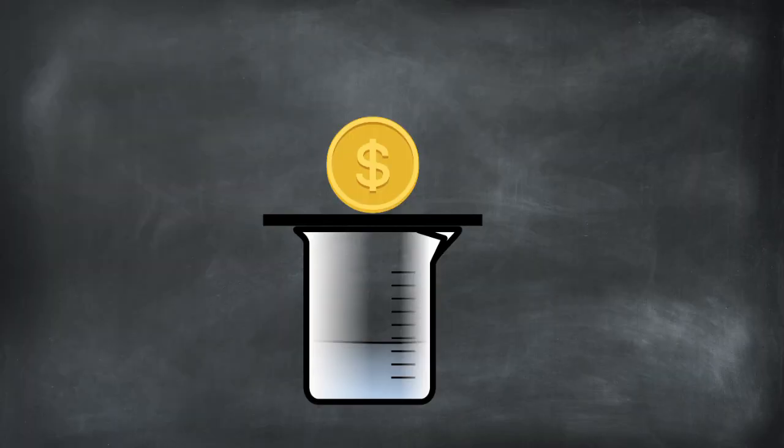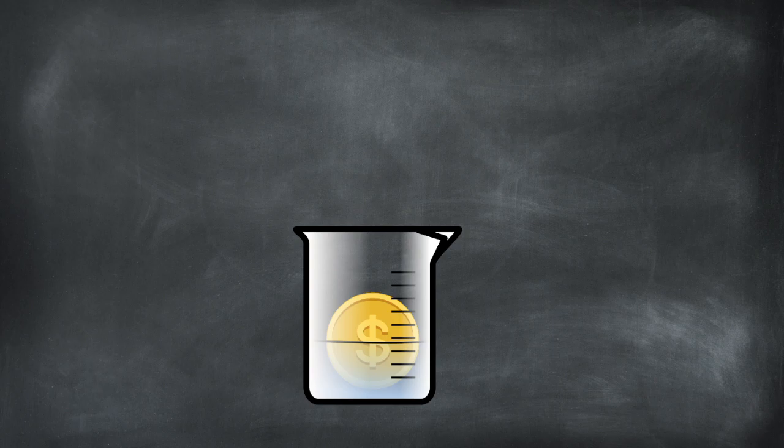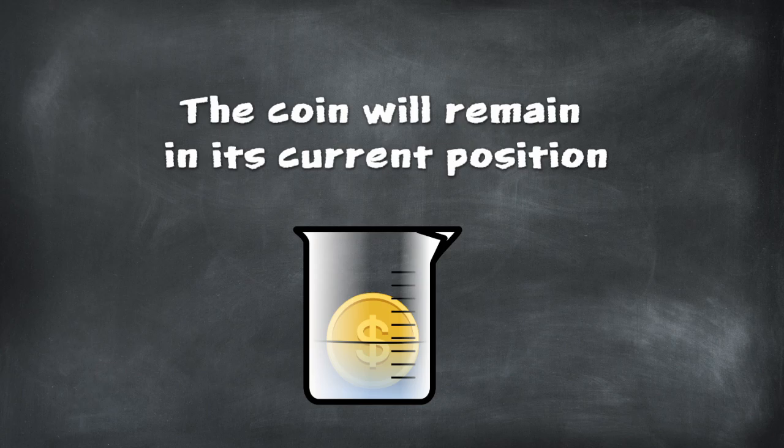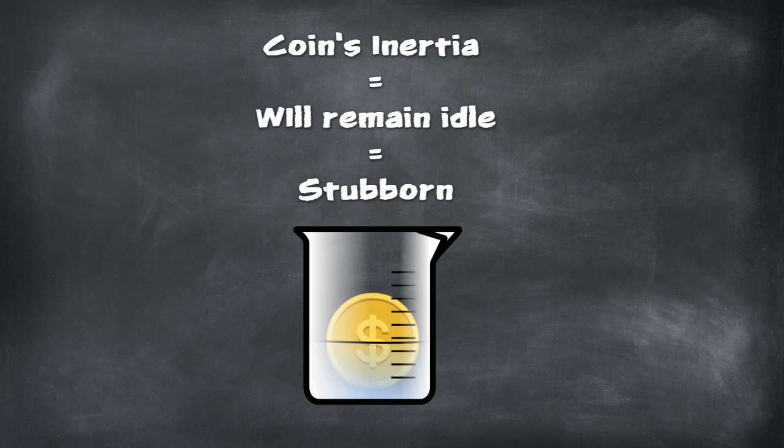Now, even when the piece of cardboard is pushed away, the coin falls into the beaker. Remember, the inertia of the coin makes it so that the coin will remain idle in its current position even though the cardboard changed velocity. This demonstrates the stubbornness of a physical object.